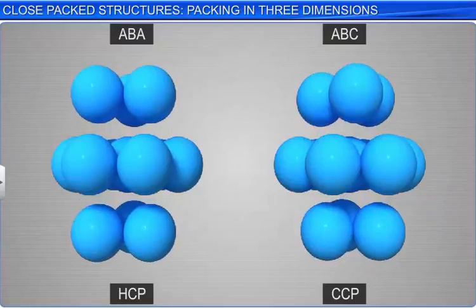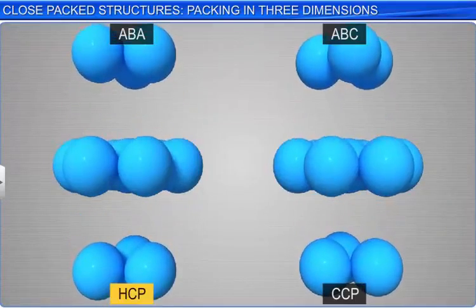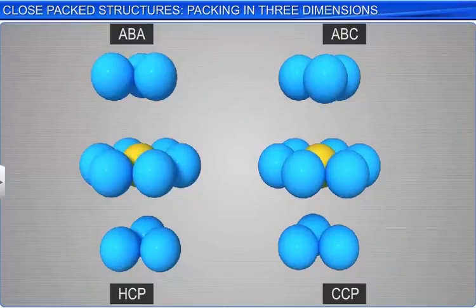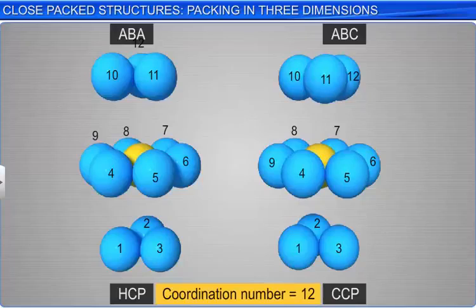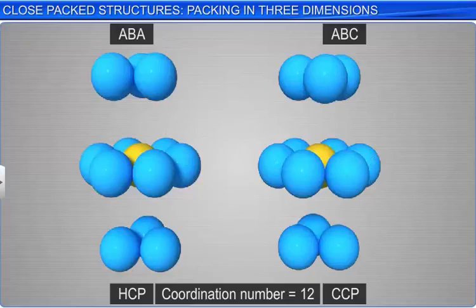Further, as can be seen in hexagonal close packing and cubic close packing, a sphere has the coordination number 12. It is in contact with six spheres in its own layer, three more in the layer above and three more in the layer below.